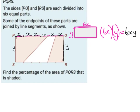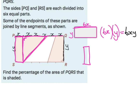The shaded region isn't a standard shape, but dropping a vertical line splits it into a rectangle and a right-angle triangle. I'll find the area of the rectangle first: x times y = xy.